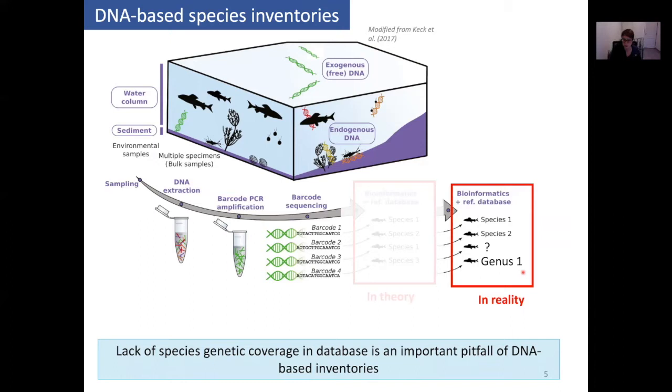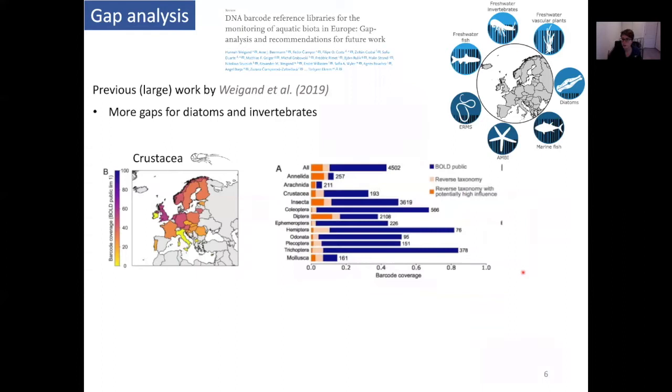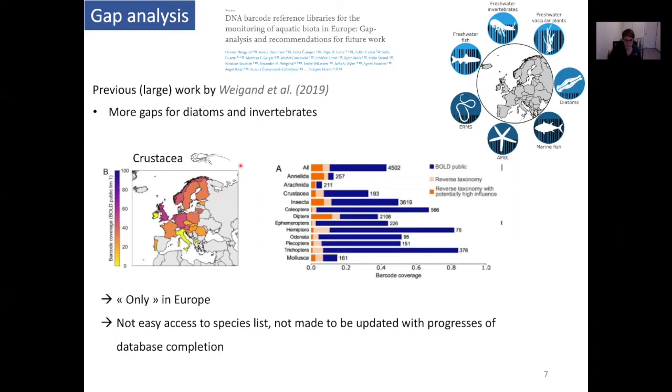That's because there's a lack of species coverage in genetic databases. It's an important problem for scaling up DNA-based inventories at the global scale. Some work has been done to quantify those gaps, like the work by Weigand et al. in 2019, where they surveyed a large number of taxonomic groups all over Europe. They found that gaps were highly different depending on the taxonomic group, with more gaps for diatoms and invertebrates. That's great work, but it's only in Europe, so you cannot scale it up to global scale. You cannot easily access the species list to see which species are sequenced and which are not. It's not made to be updated with the progress of database completion.